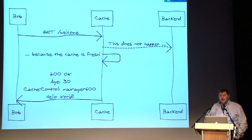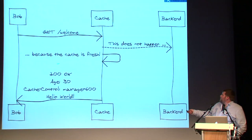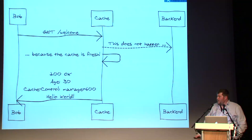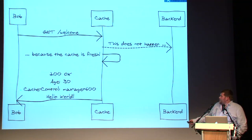On the next request, a separate user Bob requests the welcome page. The cache checks if it's still valid — it is — so it skips the backend entirely and serves the response directly from cache. The response includes an Age header of 30 seconds and the Cache-Control max-age of 600.